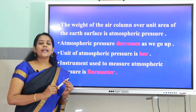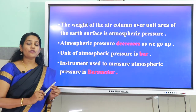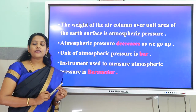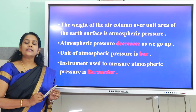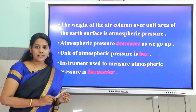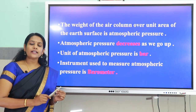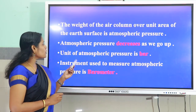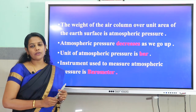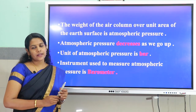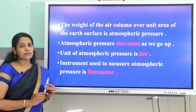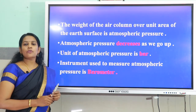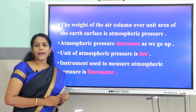This atmosphere extends up to many kilometers. The density of air near the surface of the earth is greater and it decreases as we go up. So we can say that atmospheric pressure decreases as we go up. The unit of atmospheric pressure is bar, and the instrument used to measure atmospheric pressure is the barometer.